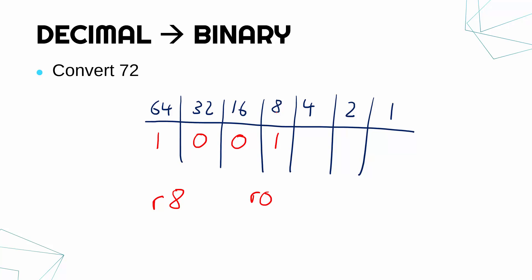Because there's nothing left over, it's a clean division. So therefore, I just put zeros in my final columns. Don't leave them blank, you've got to put more zeros. So actually, this one was quite easy. 72 is just 1001000.